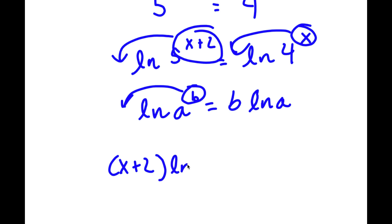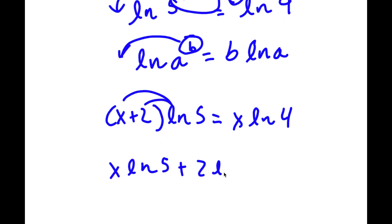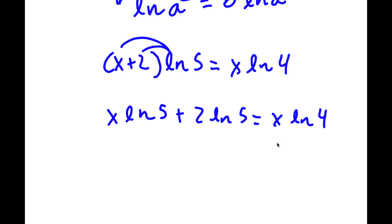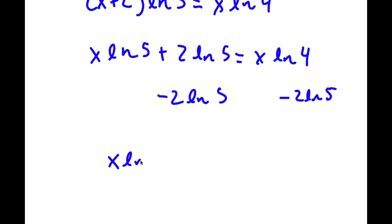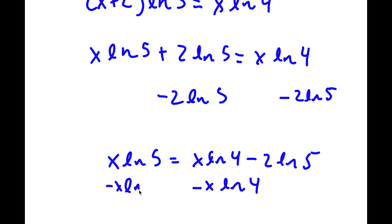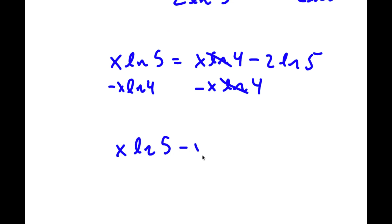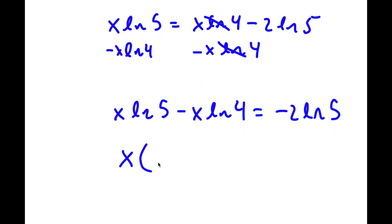So now I have x plus 2 times ln 5 is equal to x times ln 4. Distributing, I get x times ln 5 plus 2 times ln 5 is equal to x times ln 4. Subtracting 2 ln 5 on both sides gives x times ln 5 is equal to x times ln 4 minus 2 times ln 5. Then, subtracting x times ln 4 from both sides, I get x times ln 5 minus x times ln 4 is equal to negative 2 times ln 5. Factoring out x gives x times the quantity ln 5 minus ln 4 is equal to negative 2 times ln 5.